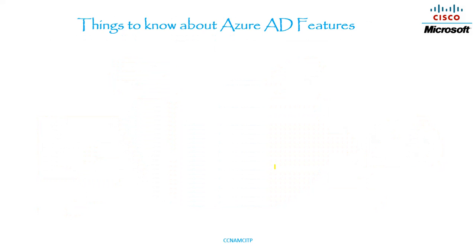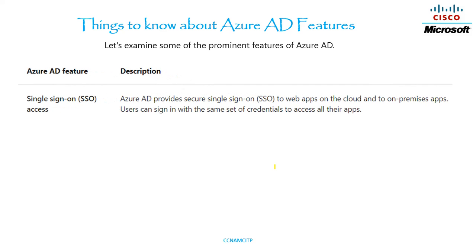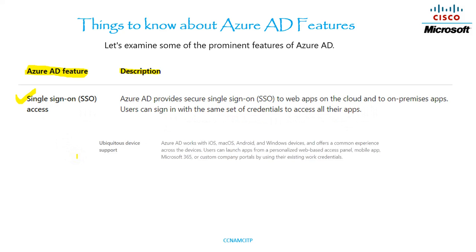Now let's examine the prominent features of Azure AD. The first feature is Single Sign-On. Azure AD provides secure single sign-on to web apps on the cloud and to on-premises apps. Users can sign in with the same set of credentials to access all their apps — that is why it is called single sign-on access.